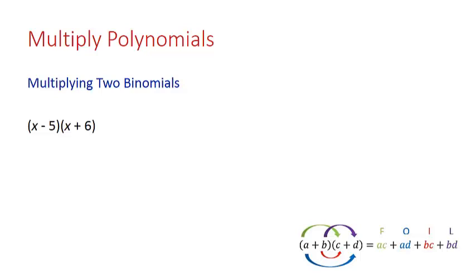In continuing the study of multiplying polynomials, we'll now focus on multiplying two binomials. Here's an example: x minus 5 times x plus 6.